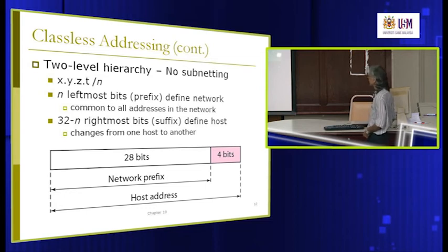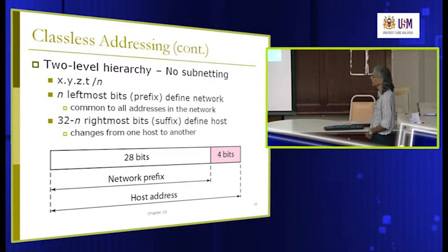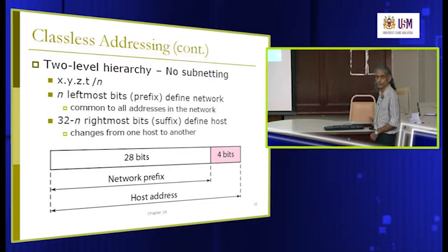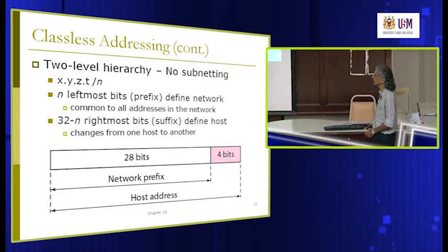The network address consists of two parts: the network prefix and the host ID. When we get a block of addresses, the network prefix we don't touch. Only the remaining host ID is the one which we can manipulate — we further subnet our addresses from the host ID portion.